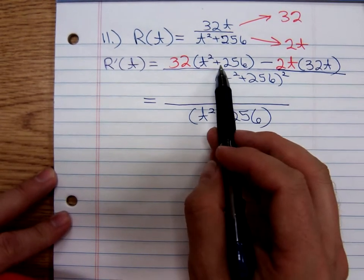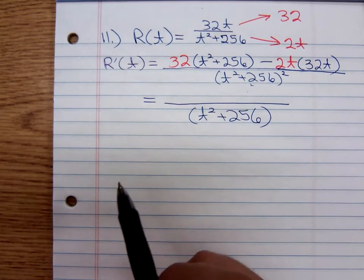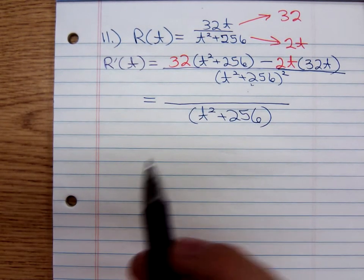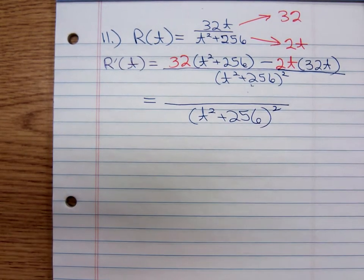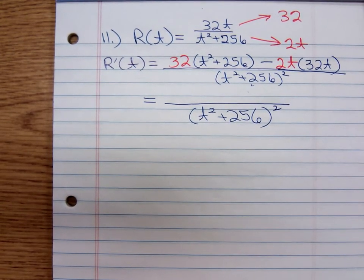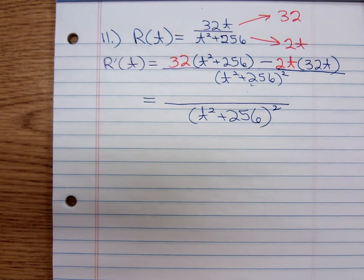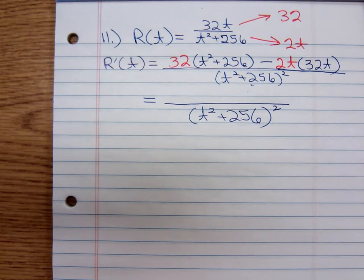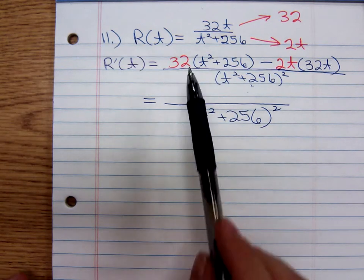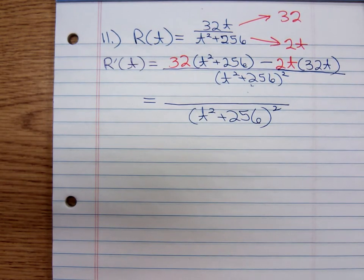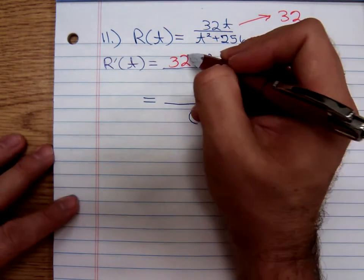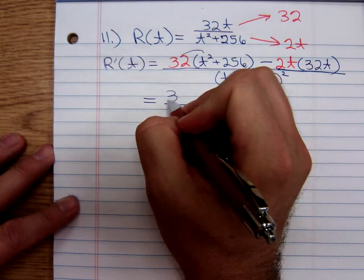Can I cancel the t² + 256? No, you cannot. That numerator is not in factored form. You cannot cancel. If you use the quotient rule and start cancelling right off, what does that mean? You're doing something wrong. Okay, so distributing the 32 over the t² + 256.